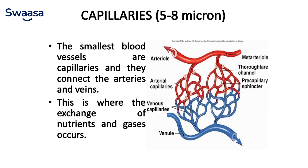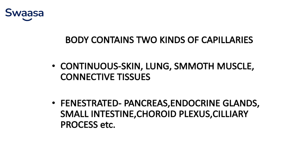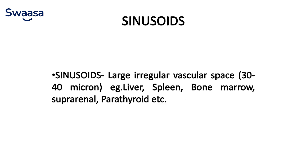Capillaries are 5 to 8 microns in size. They are the smallest blood vessels and connect the arteries and veins. This is where the exchange of nutrients and gases occurs. The body contains two kinds of capillaries: continuous — present in skin, lungs, smooth muscles, and connective tissue — and fenestrated — present in the pancreas, endocrine glands, small intestine, choroid plexus, and ciliary process. Sinusoids are large irregular vascular spaces of 30 to 40 microns in size, present in the liver, spleen, bone marrow, suprarenal, and parathyroid glands.